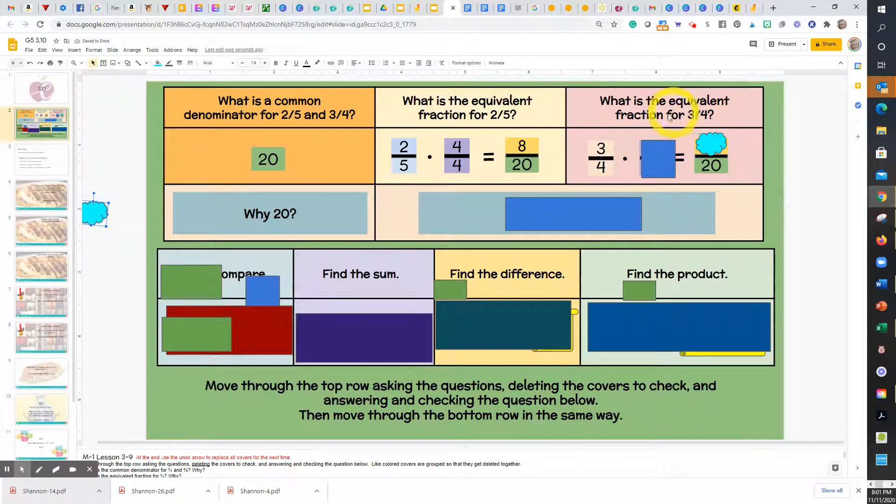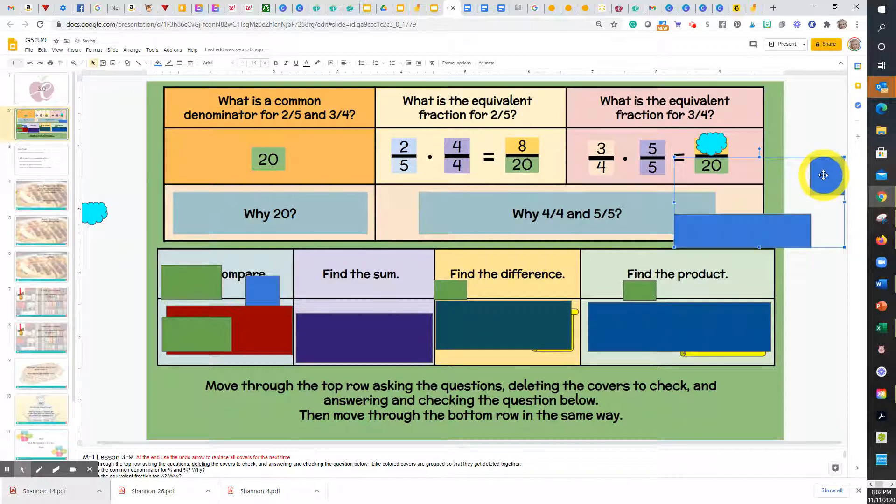Boys and girls, what is the equivalent fraction for three-fourths? Think about it. If my denominator has to end in 20th, what will I multiply three-fourths by in order to get an equivalent fraction? Think about it. Class, five-fifths. If five-fifths is the same as one whole, the equivalent fraction is going to be class 15-twentieths.